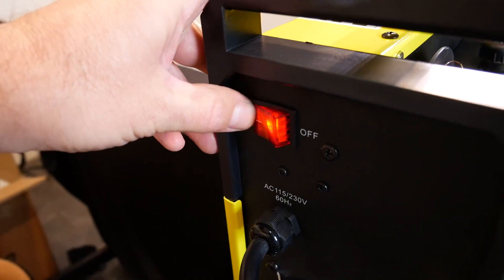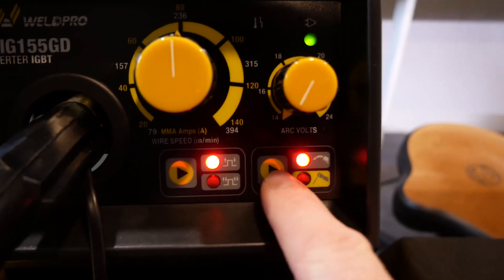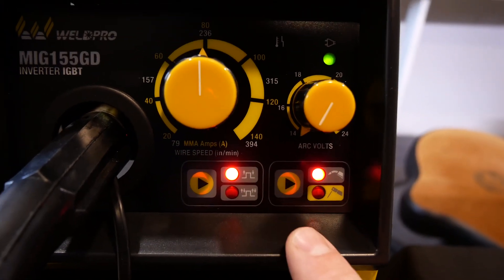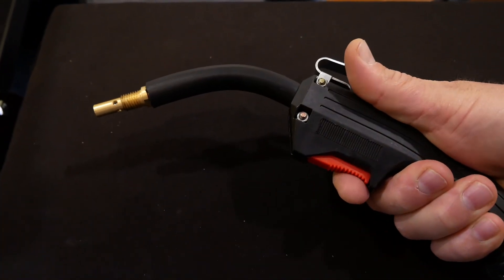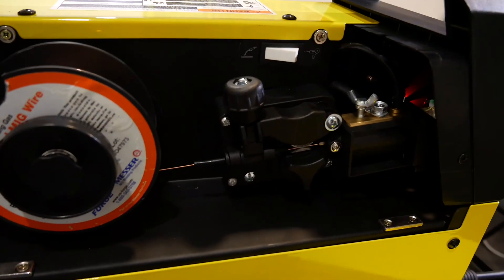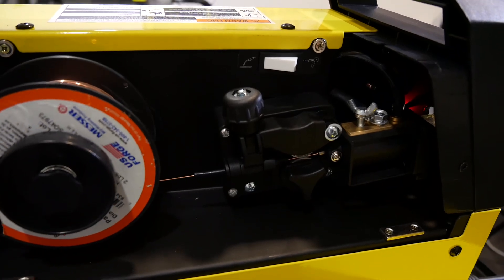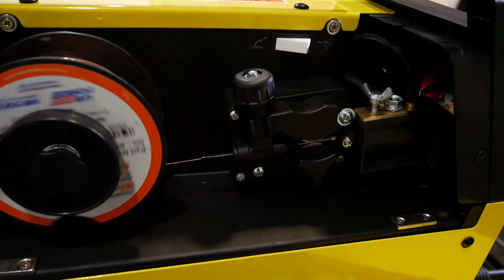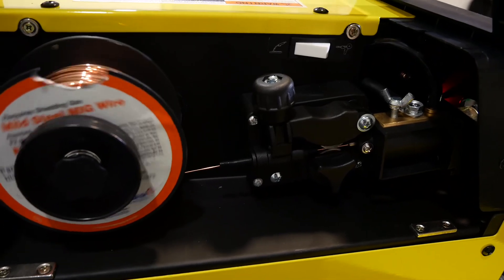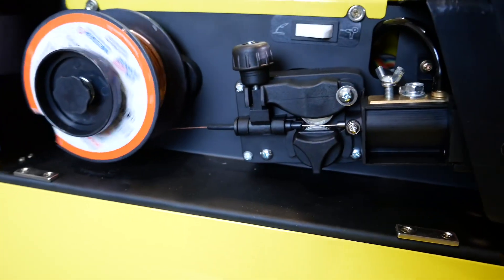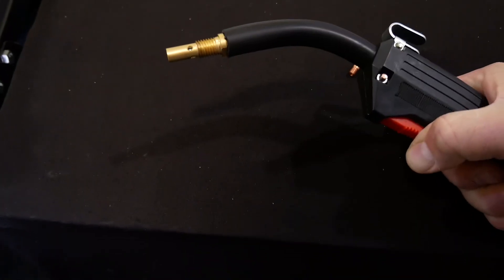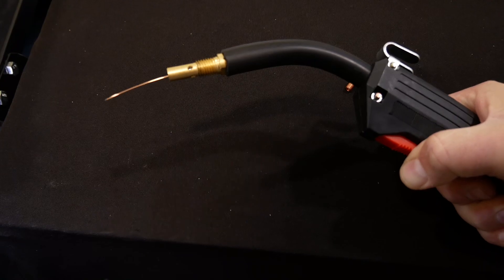Energize the machine, and we'll adjust some settings on the front display. First, let's go ahead and make sure we're in MIG mode, not stick. Squeeze the trigger on the MIG gun to begin feeding wire through the liner. You'll see the spool begin to spin. After a few moments, the wire speed will increase rapidly. This is to help get wire through the liner tube as quickly as possible. Don't try to adjust your wire speed during this time.